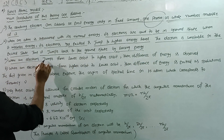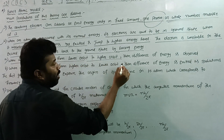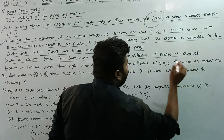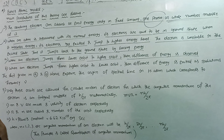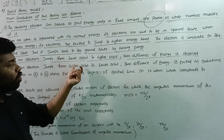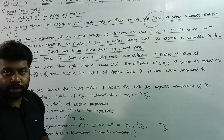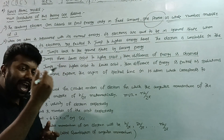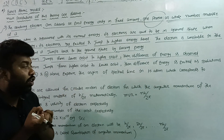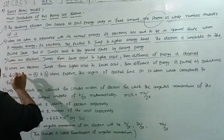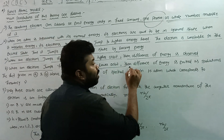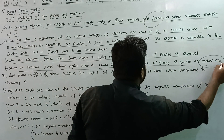When an electron jumps from a lower orbit to a higher orbit, the difference of energy is absorbed. When an electron jumps from a higher orbit to a lower orbit, the difference of energy is radiated.